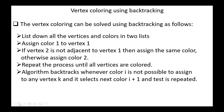One strategy used to solve the coloring problem is backtracking. The vertex coloring can be solved using backtracking as follows: list all vertices and colors in two lists; assign color 1 to vertex 1; if vertex 2 is not adjacent to vertex 1 assign it the same color, otherwise assign color 2; repeat until all vertices are colored. The algorithm backtracks whenever color i cannot be assigned to vertex k, selects the next color i plus one, and the test is repeated — applying a bound condition instead of using the complete search tree.